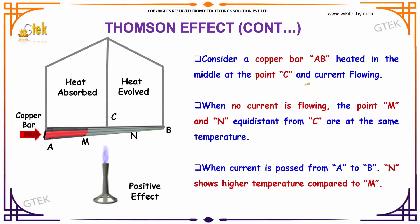Consider a copper bar A and B, heated in the middle at point C, and current is flowing. When no current is flowing, points M and N are equidistant from C and are at the same temperature. When current is passed from A to B, N shows a higher temperature compared to M.